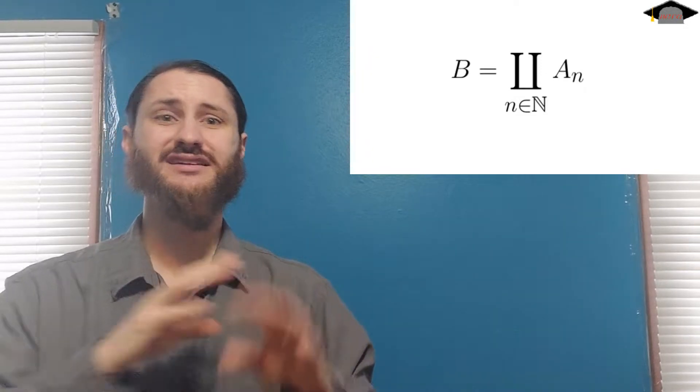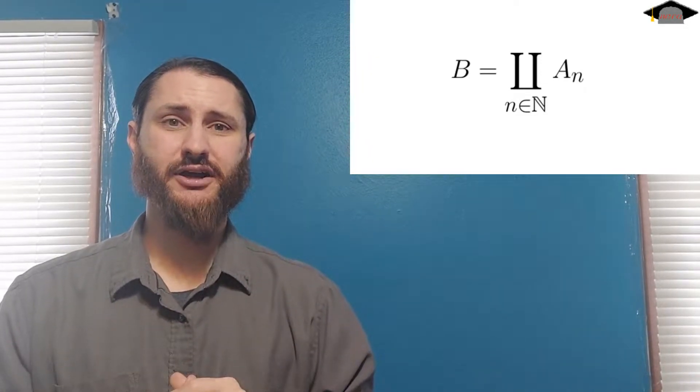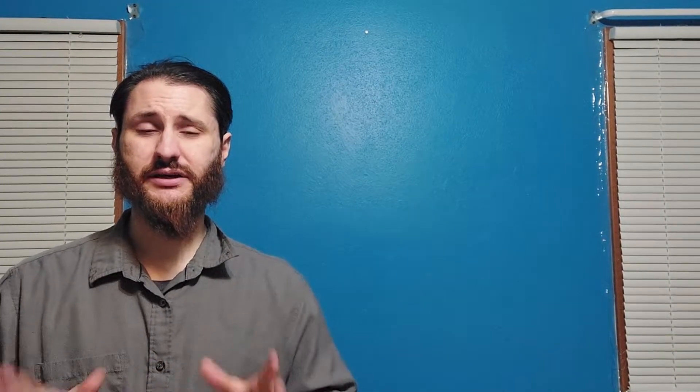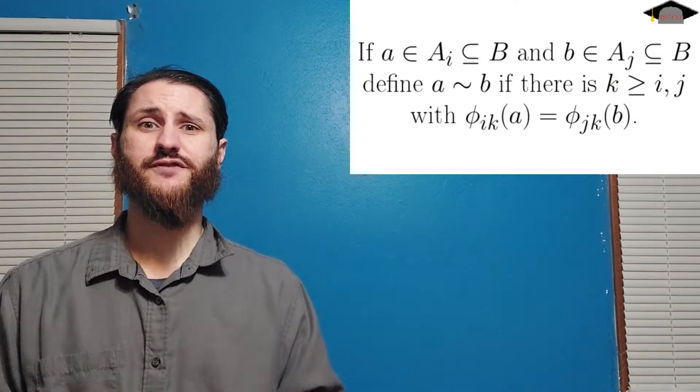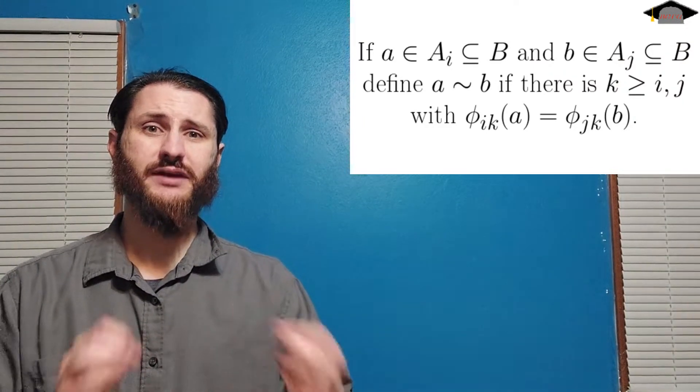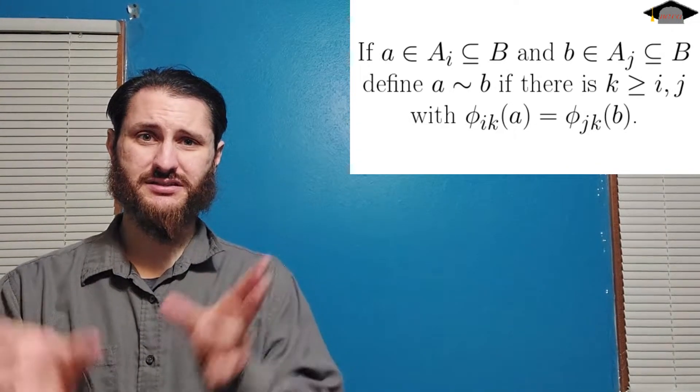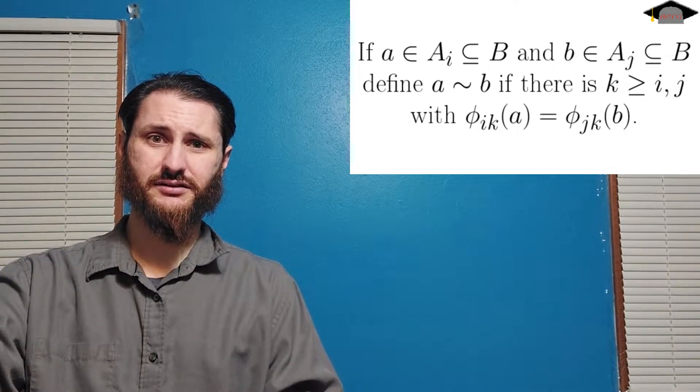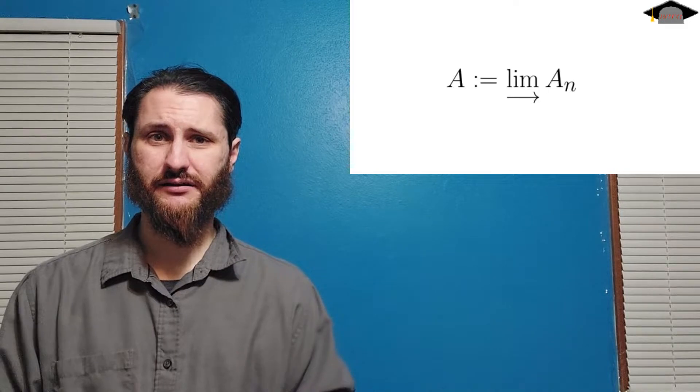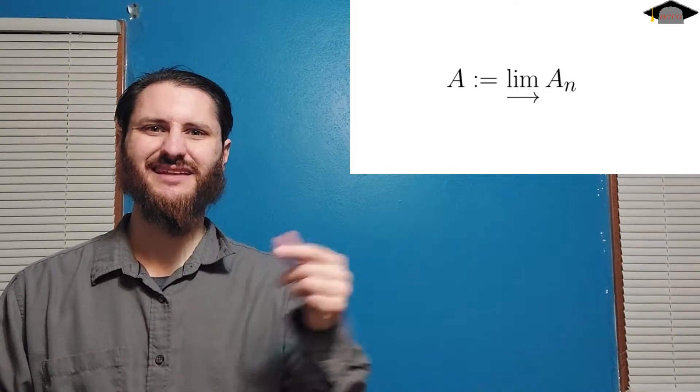If you haven't seen it before, that symbol there is an upside down capital pi, and that's the symbol we often use to denote a disjoint union. The next thing we want to do is define an equivalence relation on this big set b, this disjoint union. So we're going to say that two elements of b — just call them little a and little b — that came from different original groups are going to be equivalent if they get mapped to the same spot in a different group under the appropriate homomorphisms. That set is what we would call the direct limit of the sequence of groups A sub n, and we denote it like this with the limit sign and then just an arrow.